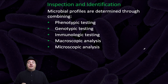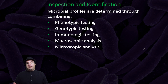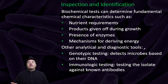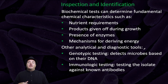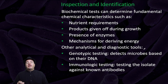The last two I's are inspection and identification. Microbial profiles are determined through combining phenotypic testing, genotypic testing, immunological testing, macroscopic analysis, and microscopic analysis. For example, biochemical tests can determine fundamental chemical characteristics such as nutrient requirements, products given off during growth, presence of enzymes, or mechanisms for driving energy. Genotypic testing detects microbes based upon their DNA, while immunologic testing tests the isolate against known antibodies.